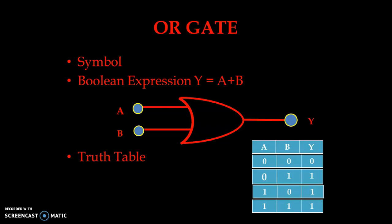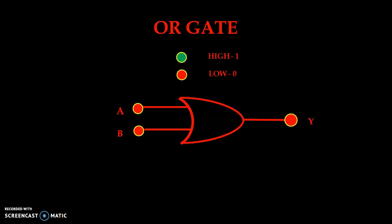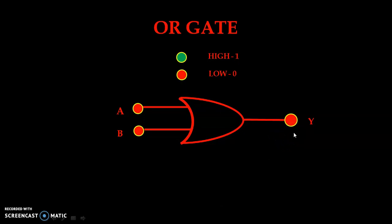Now let us simulate the OR gate. Green indicates high level and red indicates low level. First condition 0,0 — A and B both inputs are at 0 level — output is also at low level. Next we change to 0,1 — input A is at low level and B at high level — so output goes high. Next condition 1,0, output again goes high. And if we apply 1,1 both inputs at high level, we have output high. This way we can simulate our OR gate and verify the truth table.